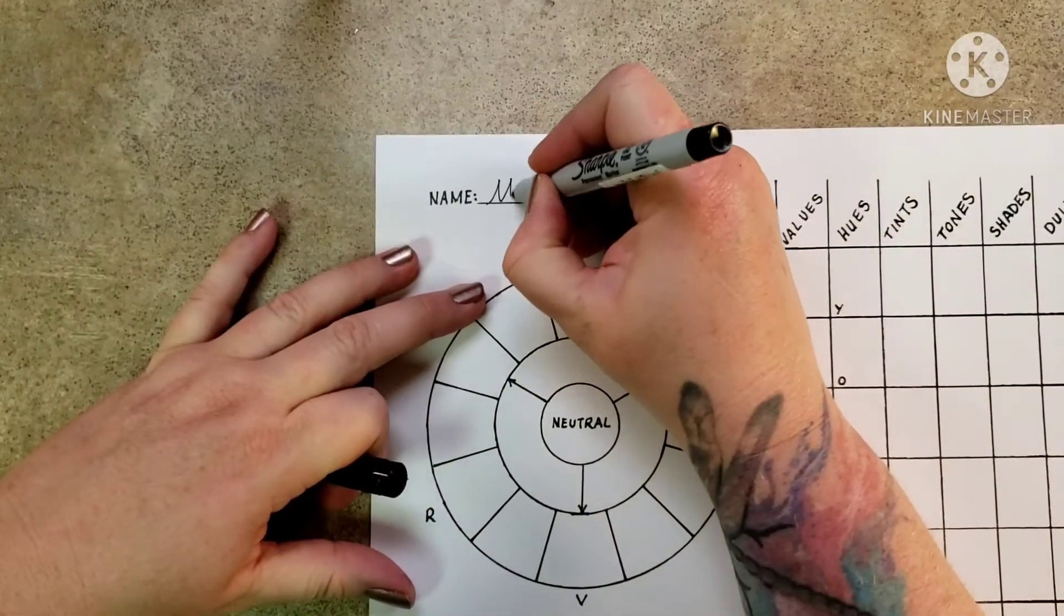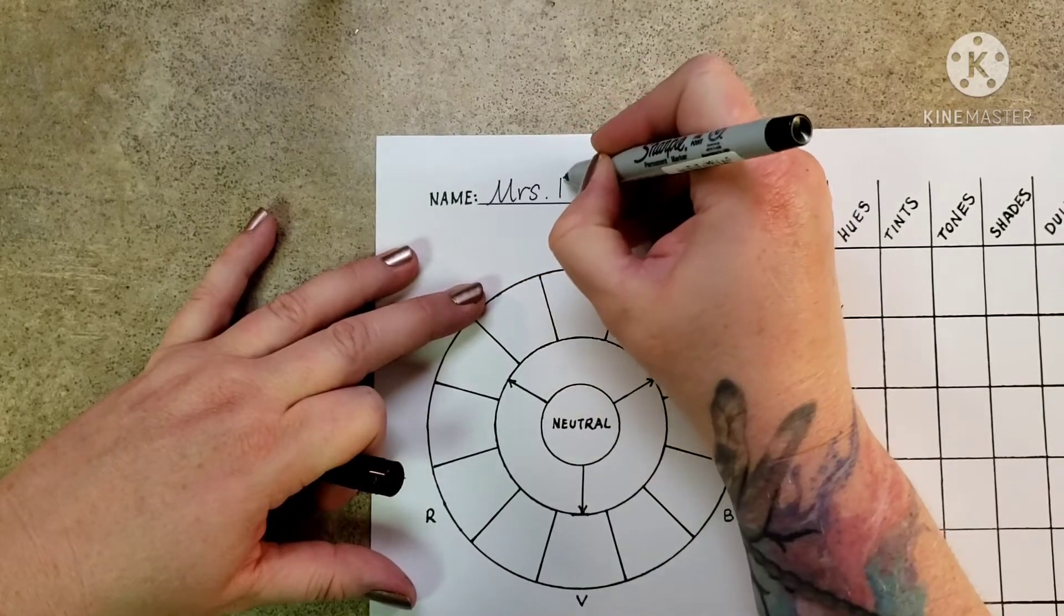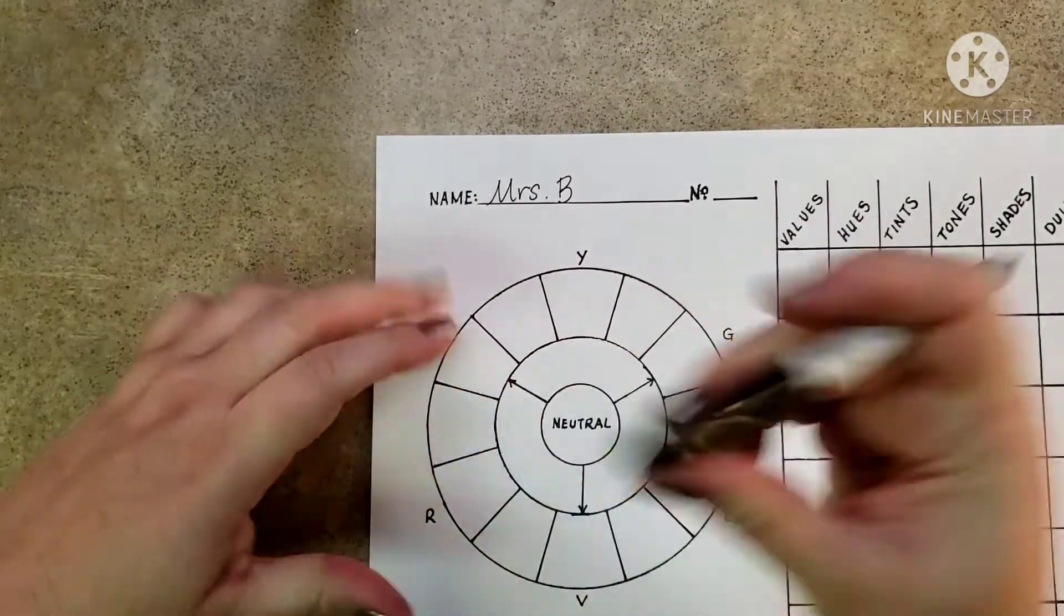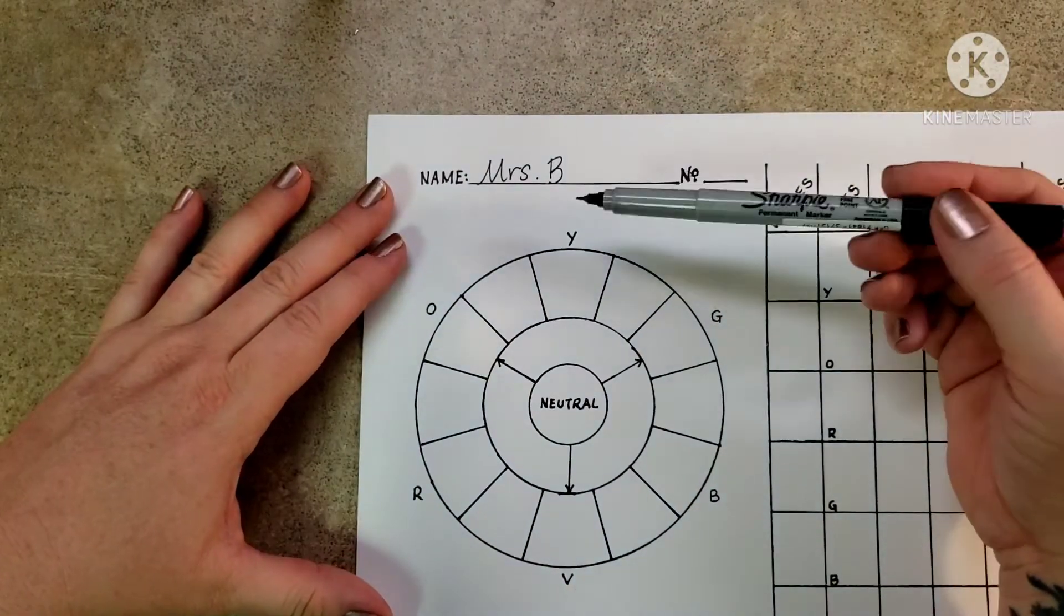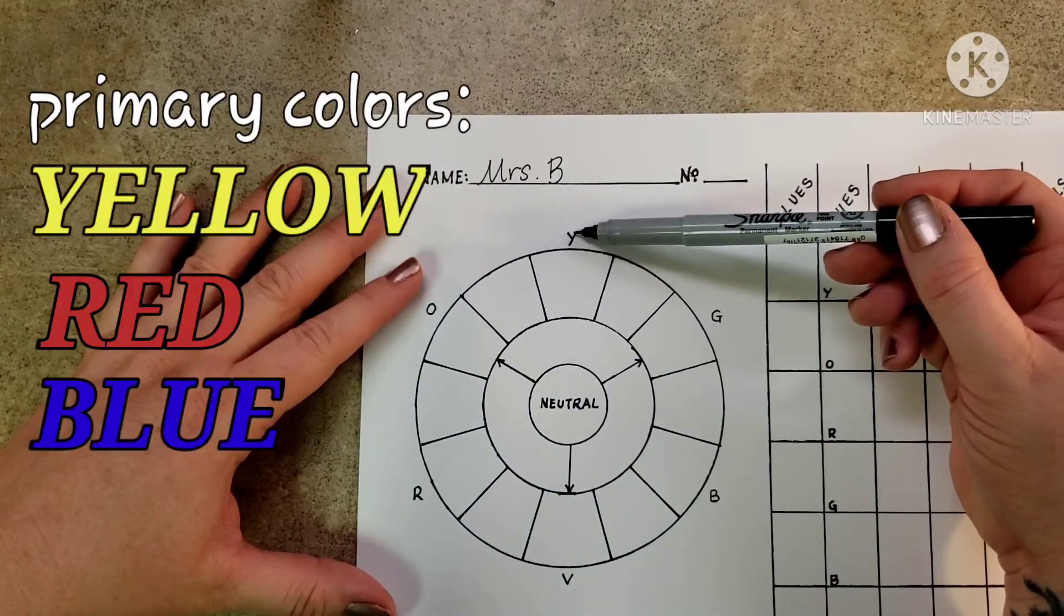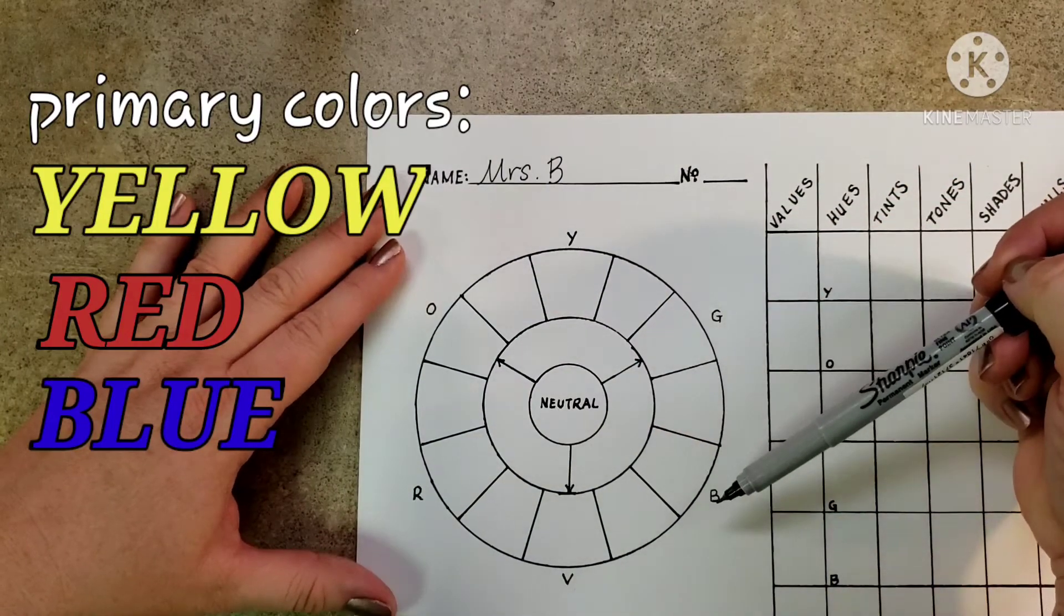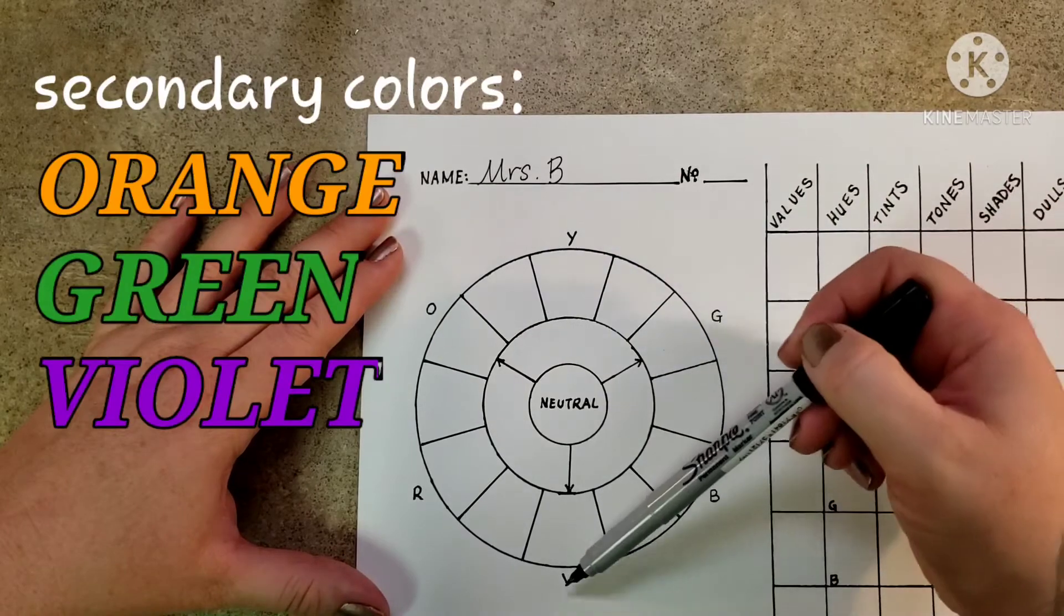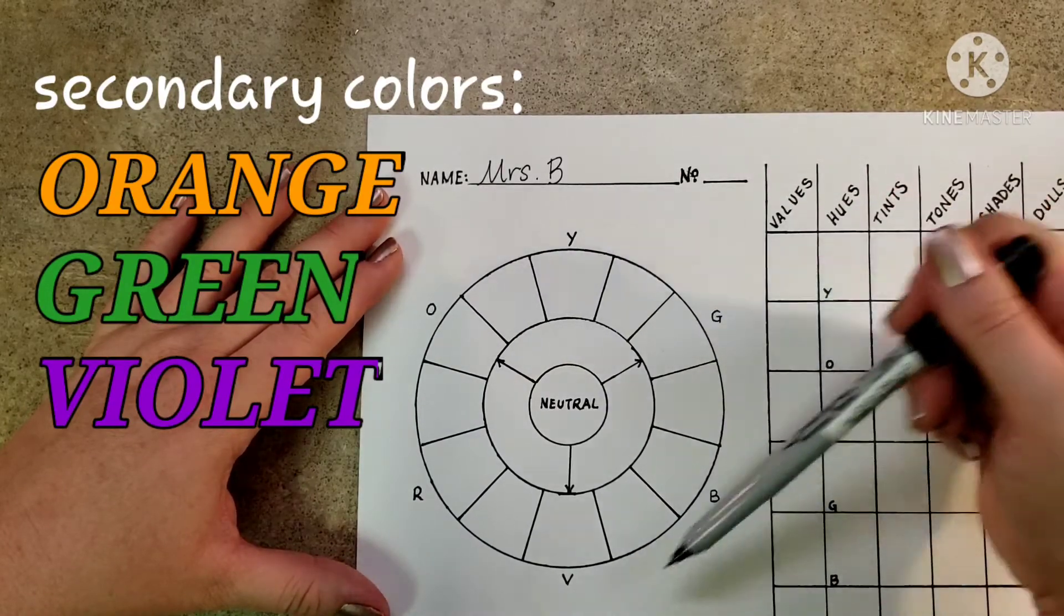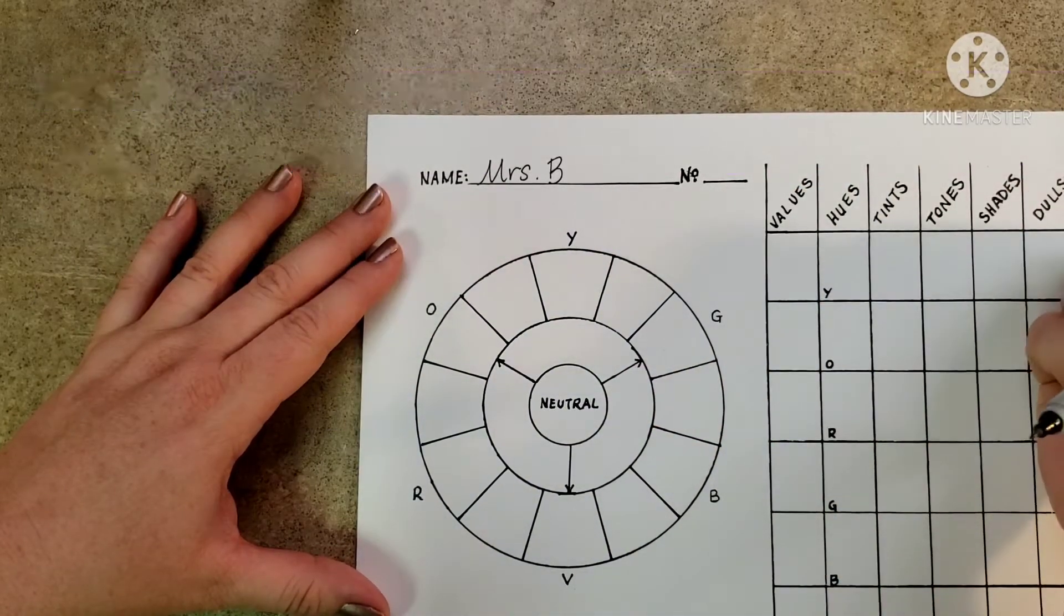Please put your name on the line and we're going to label the six intermediate colors. Here you see the three primaries yellow, red and blue, and the three secondaries orange, green, violet, so we have to complete the six intermediates that are missing.